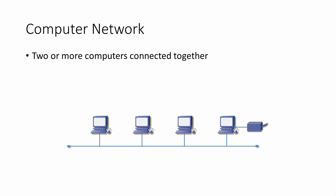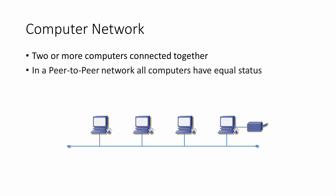In a peer-to-peer network, all of the computers have equal status. You could say that a peer-to-peer network has no server, or if all of the workstations share files and peripheral devices, they can all be thought of as servers.